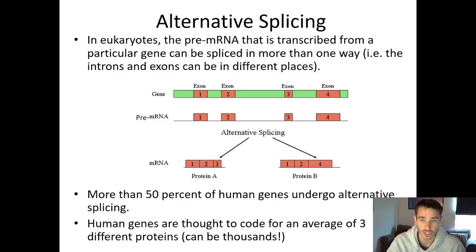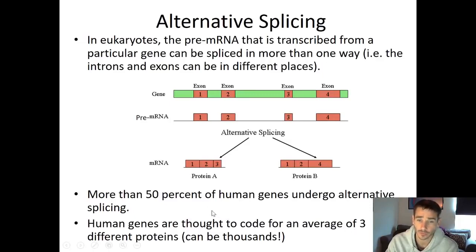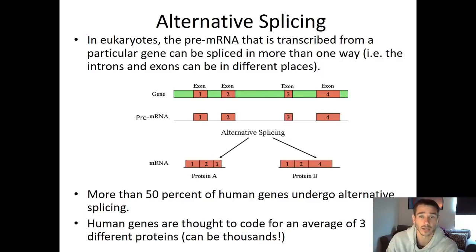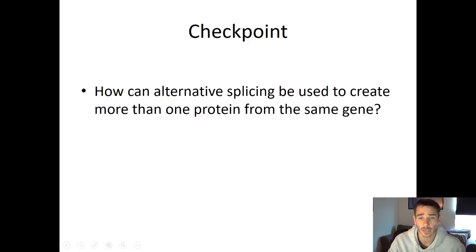About 50% of human genes undergo alternative splicing, and on average there are about three different proteins per gene. However, some genes can be spliced thousands of different ways to make thousands of different proteins. This is another way cells take genetic information and regulate how it's used to make different proteins. For your last checkpoint, write in your own words an explanation of how alternative splicing can create more than one protein from the same gene. If you have any questions, let me know. Thanks for watching, and I'll see you in class.